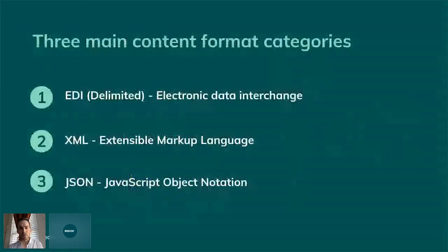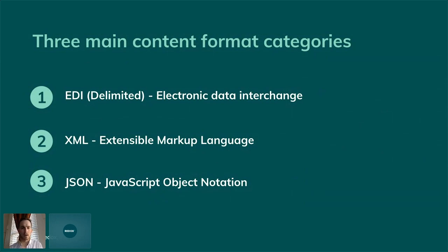There are three main content format categories, from oldest to newest: EDI — electronic data interchange — the delimited formats; XML — extensible markup language, which became very popular in the internet era for structured data exchange; and JSON — JavaScript Object Notation. These are the main ones. DICOM notably doesn't really fall into any of these three formats, but for most use cases it's important to know these three.